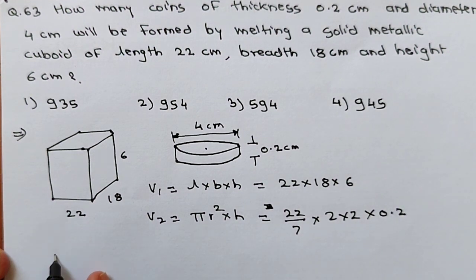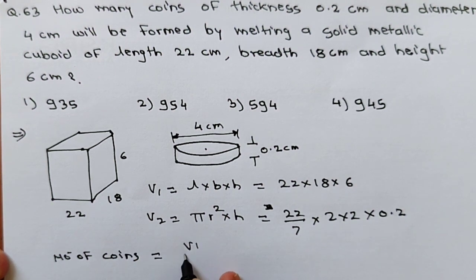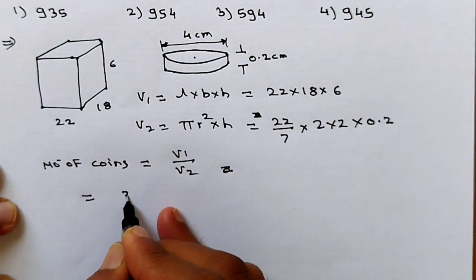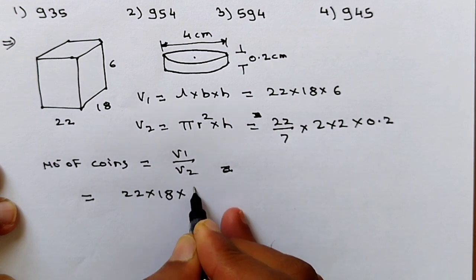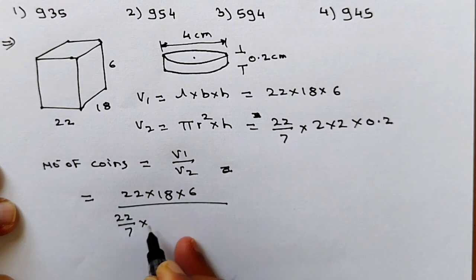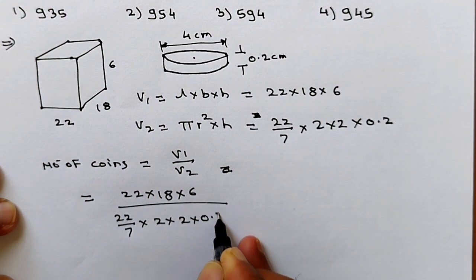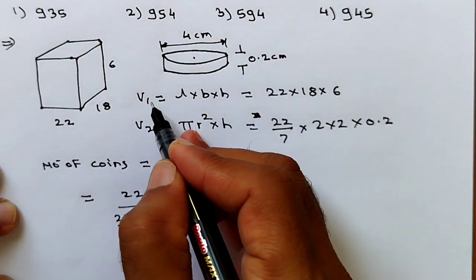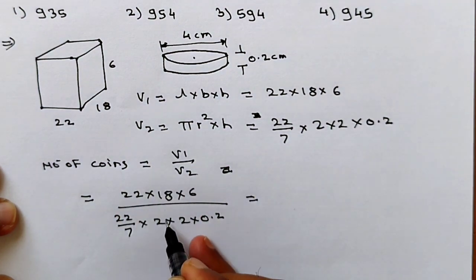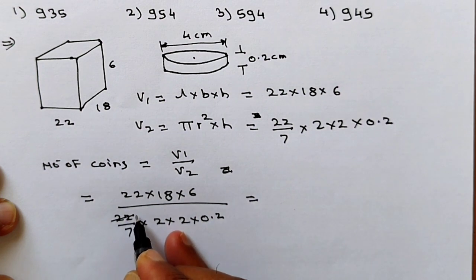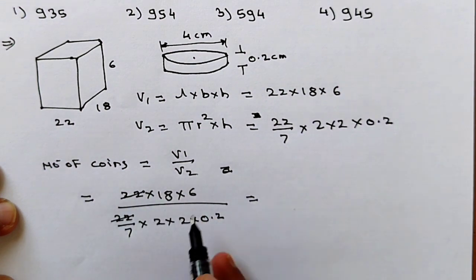Total number of coins equals V1 upon V2, which is very simple. So number of coins equals 22 into 18 into 6 divided by 22 upon 7 into 2 into 2 into 0.2. Now simplify: this 22 cancels with the 22 in the denominator. Then 18 gives 9 and 6 gives 3 after canceling with the 2s.